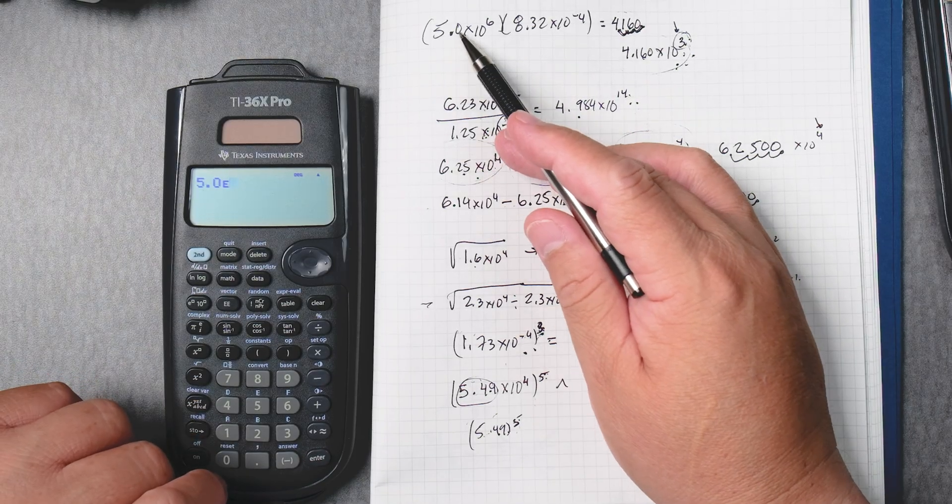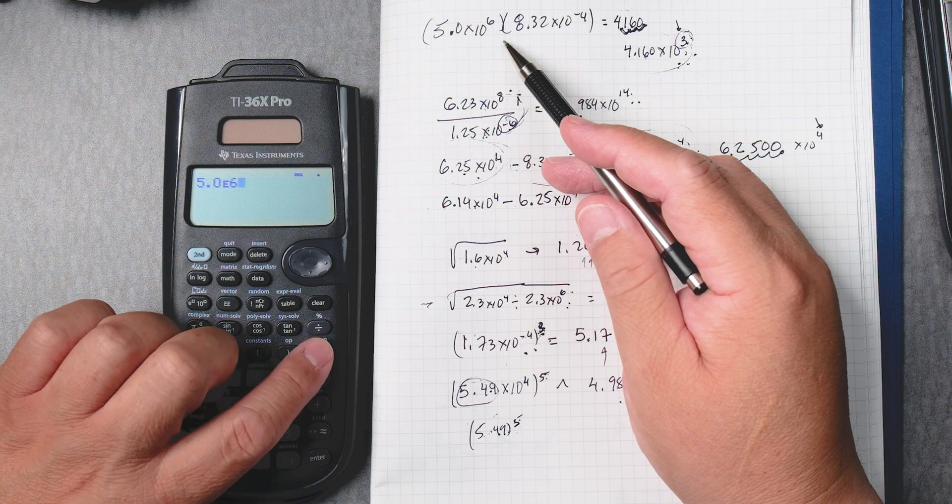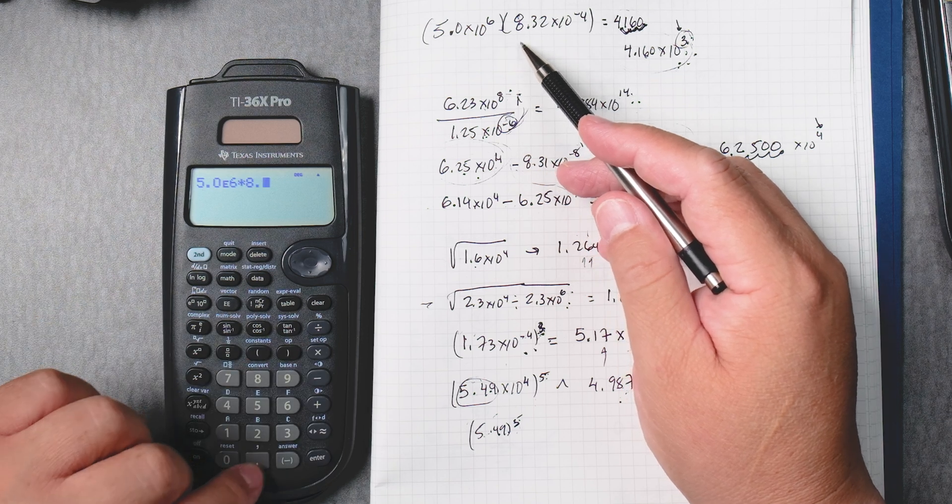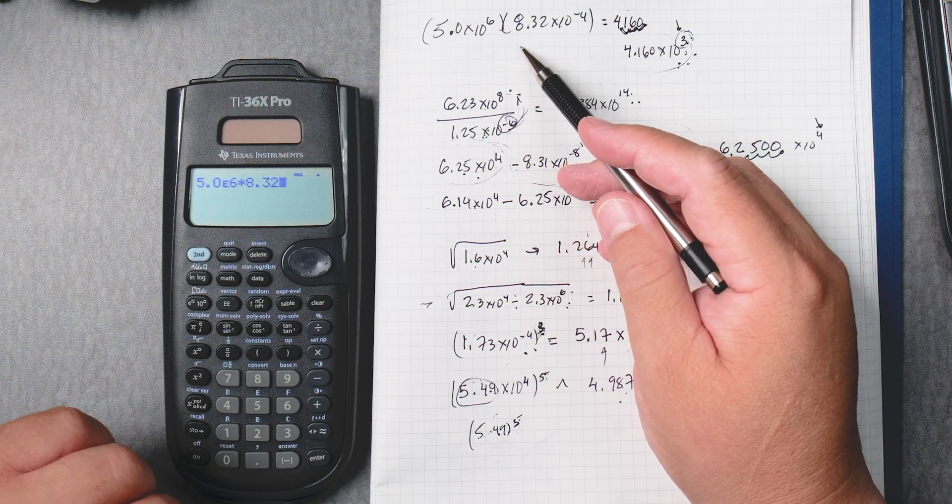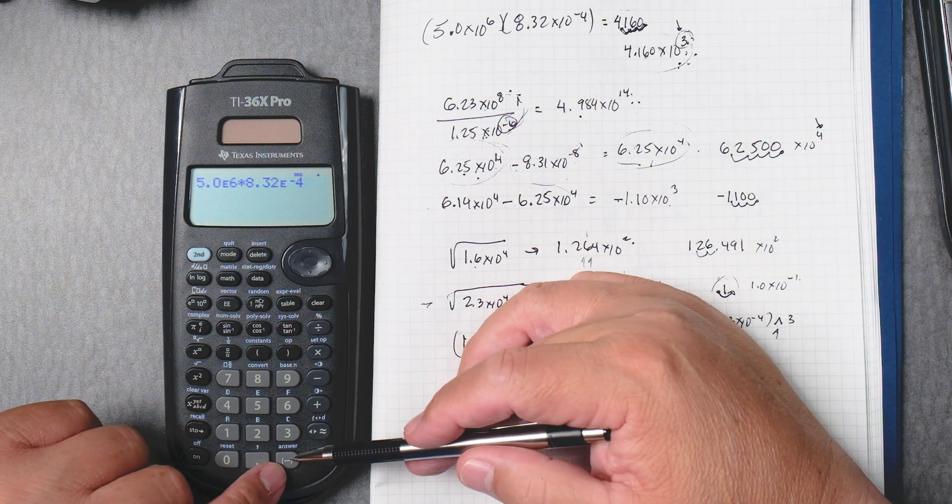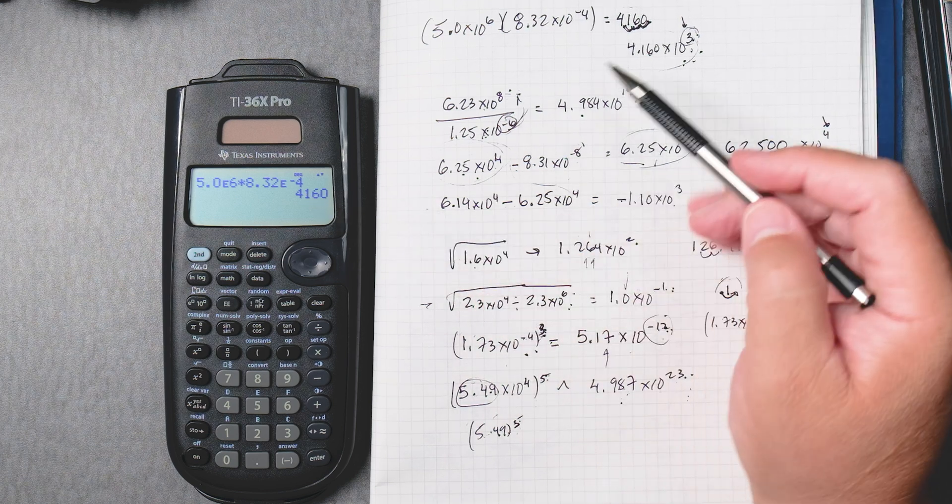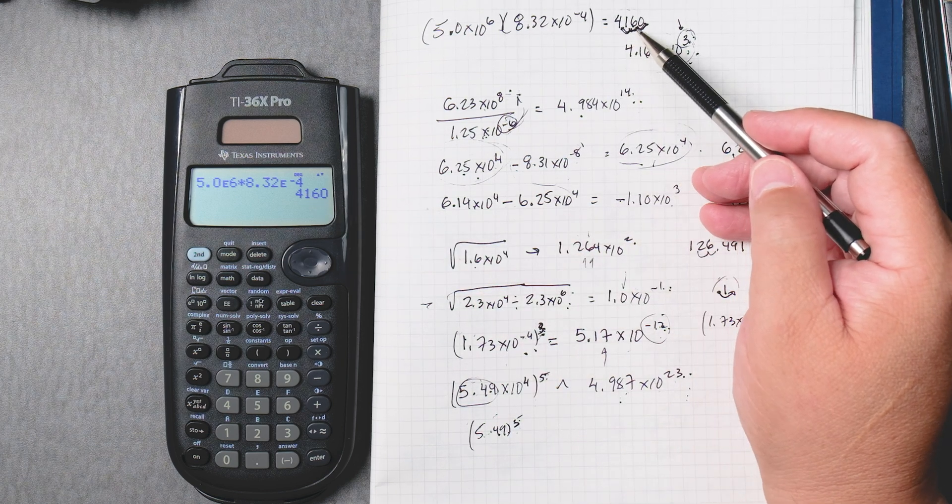So that's 5.0 times 10 to the sixth, and I'm going to put times 8.32 EE to the minus 4, and you press enter, and it gives you 4,160.